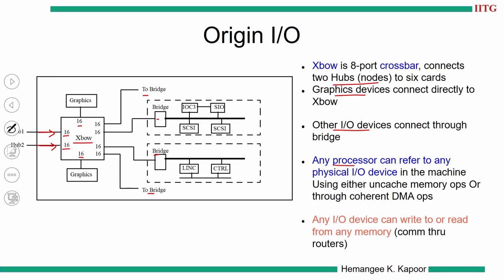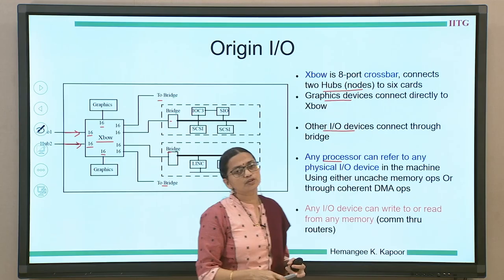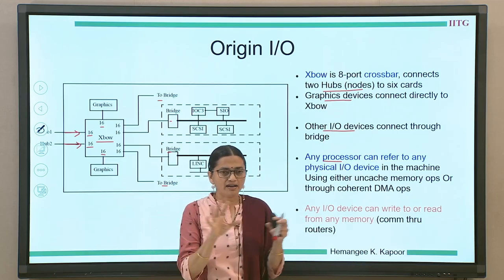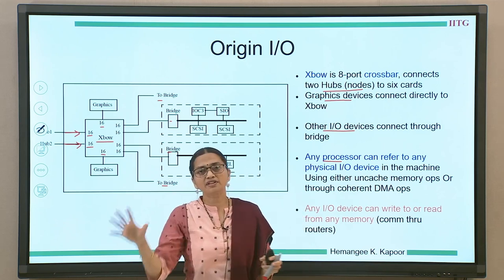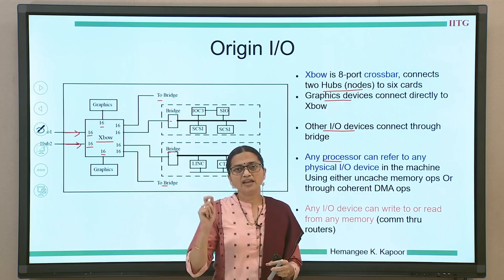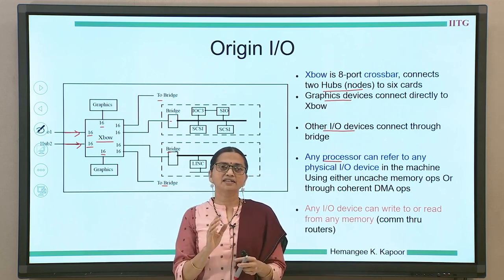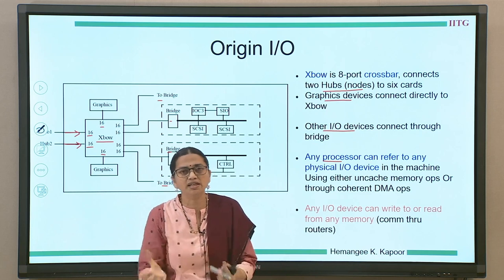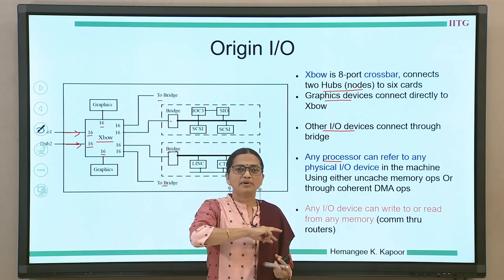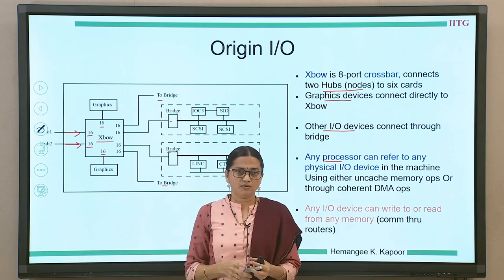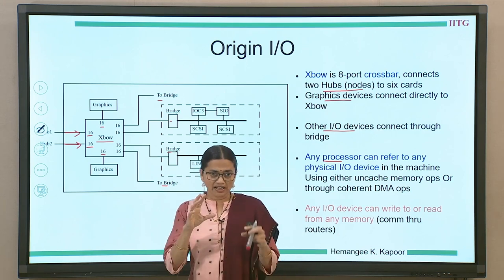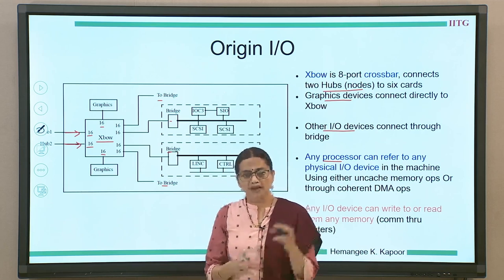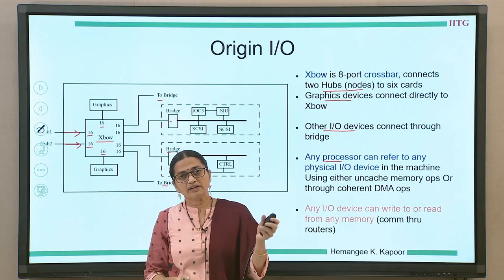With two hubs you have four processors. If you connect multiple such nodes, you have multiple processors in the system. When connecting one node to several others through a scalable interconnect, every IO device can access memory from any board in the system. With two hubs you have two boards connected; connecting four or sixteen lets you access data from any memory and any IO device. The XBO and hub together enable accessing data from any module in the system.